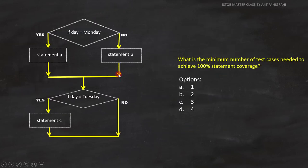Now let's analyze the flowchart to get the answer. As per the question, we have defined statement coverage. Since the statements are present in two different branches, we need two test cases to cover 100% statement coverage. Therefore, option B, 2, is the answer.